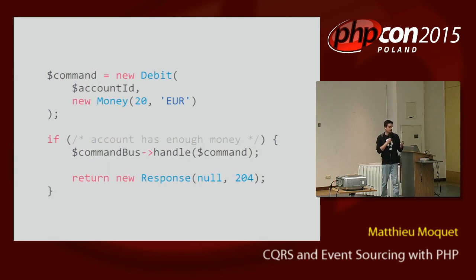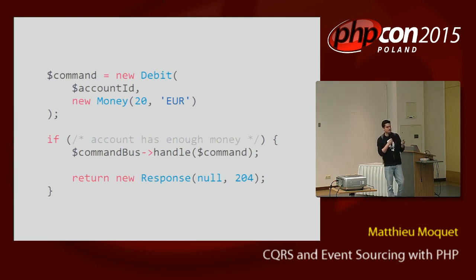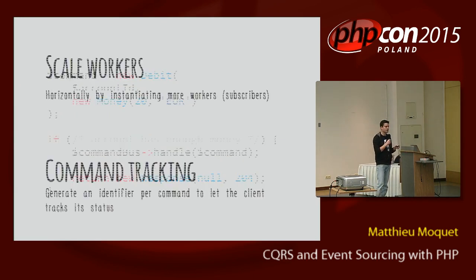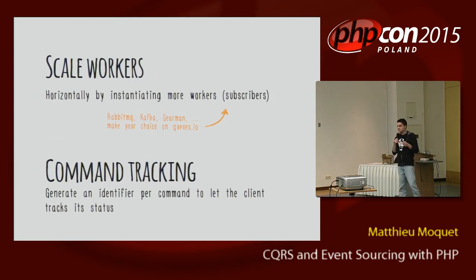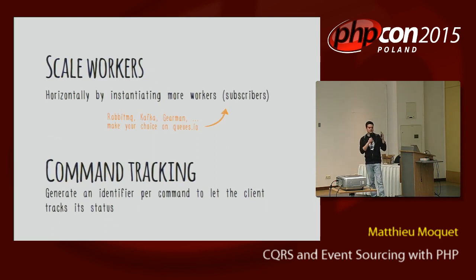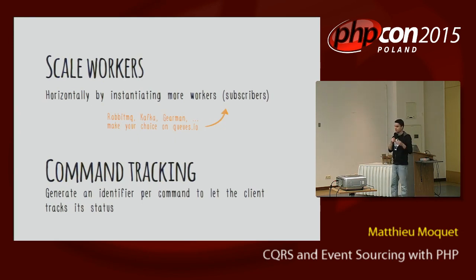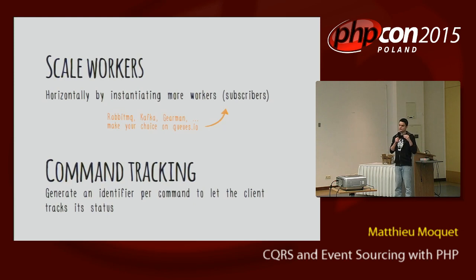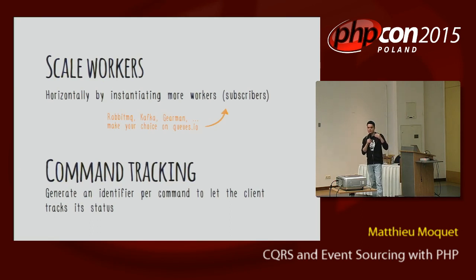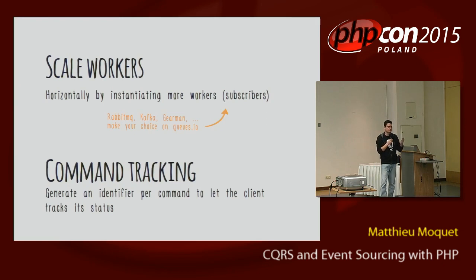Another example with a debit: I just create a new command, check in my controller if I have enough money on my account, if I can do the debit, and if it's okay, respond to the user. Doing things asynchronously, it's very easy to scale workers — you can dispatch all the commands to separate processes and use your favorite technologies like RabbitMQ, Kafka. You can also do command tracking for logs, give the user back an ID, and check via poll or push when the account is really created.